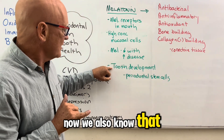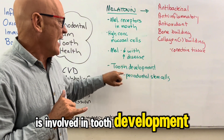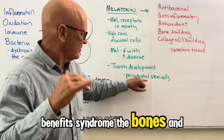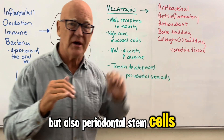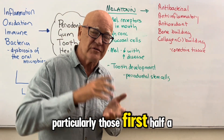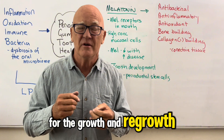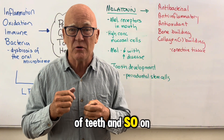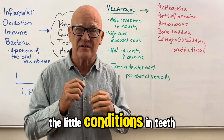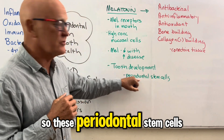We also know that melatonin is involved in tooth development, and it produces benefits not just in terms of bones, but also periodontal stem cells — the stem cells particularly important in those first half-dozen years of life for the growth and regrowth of teeth, and later in life for repair of conditions in teeth and around the gums.